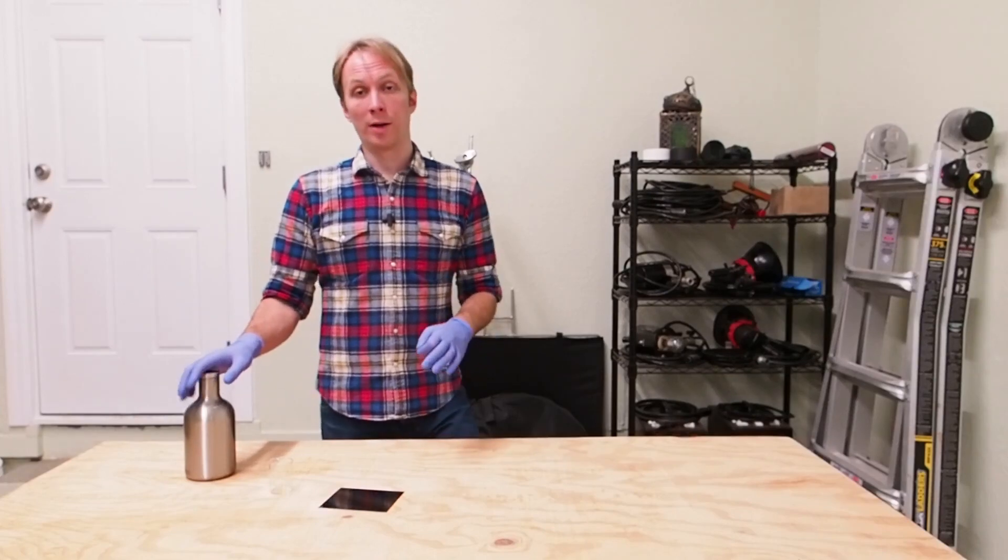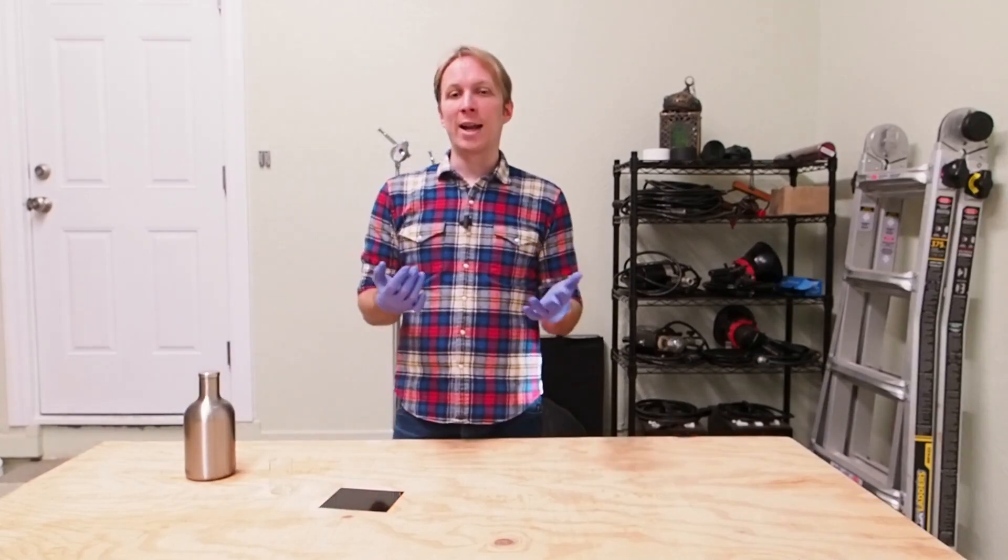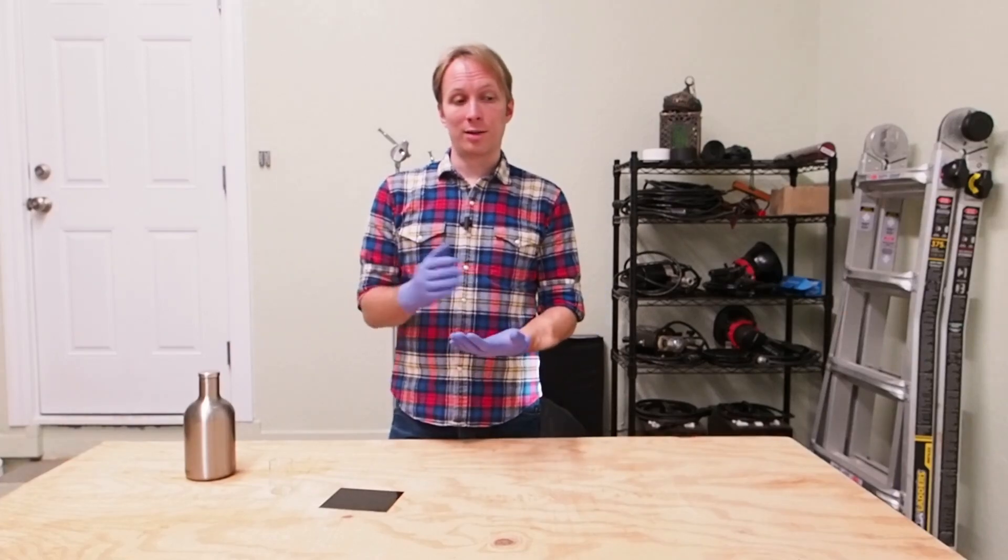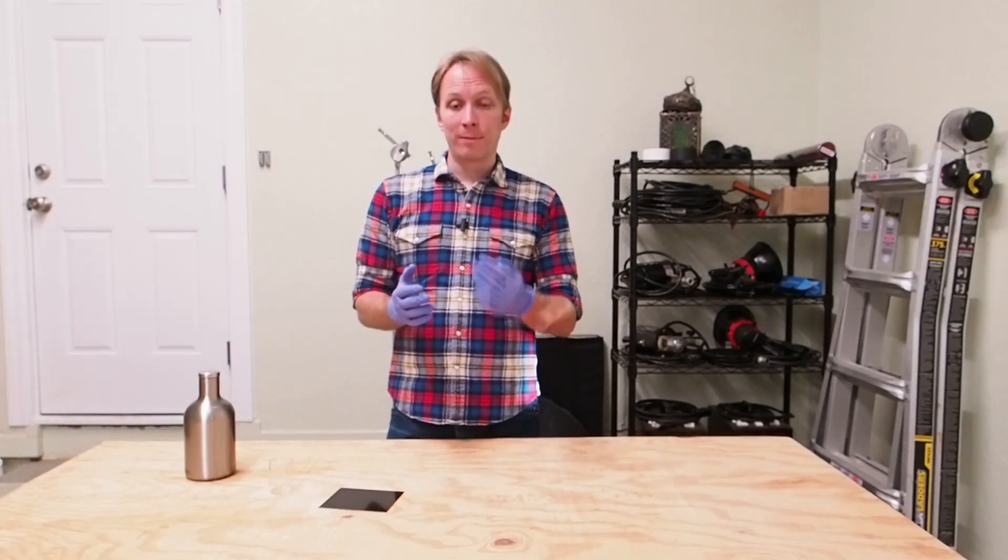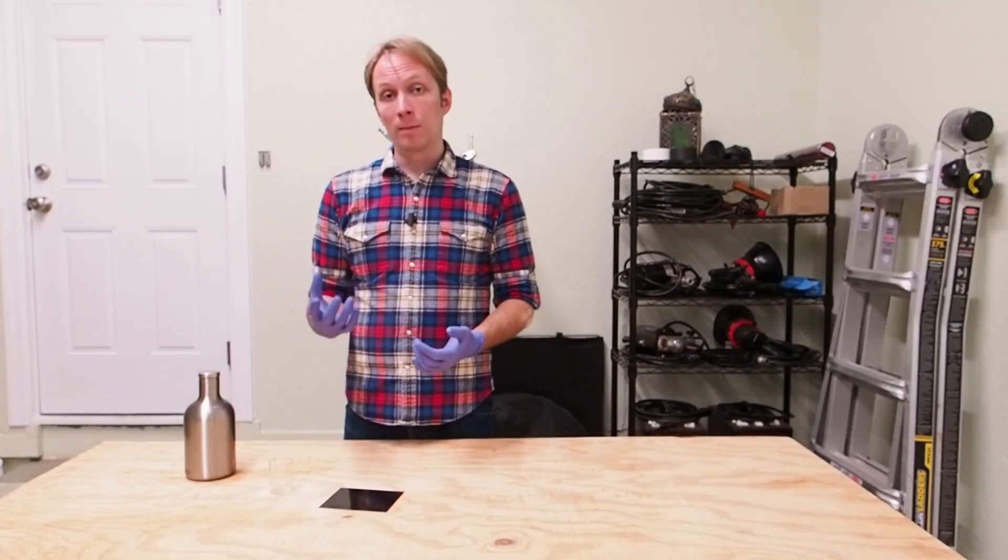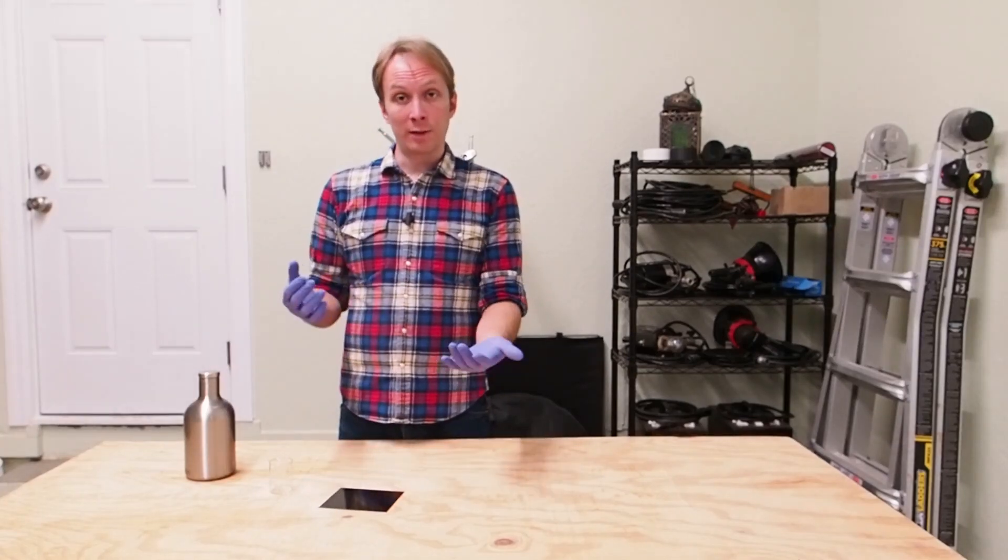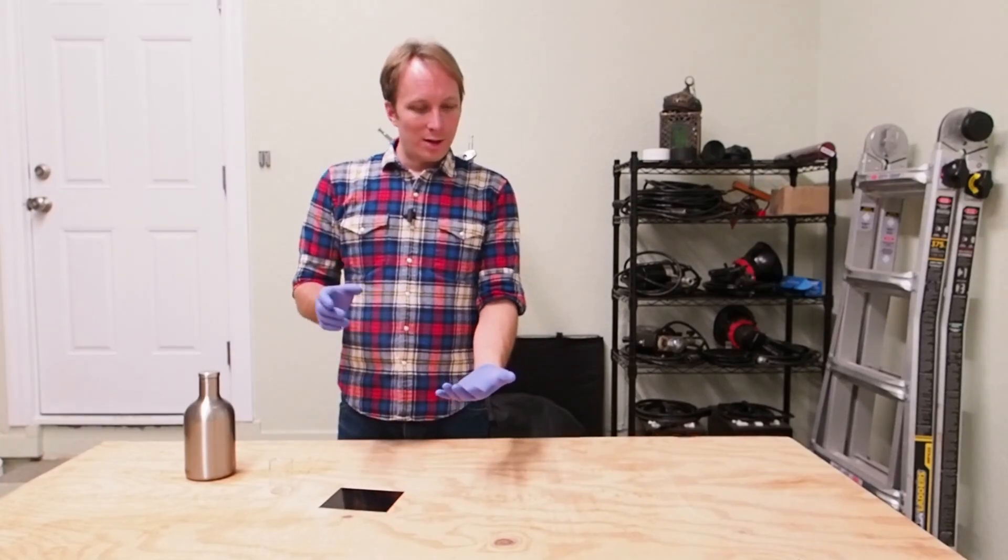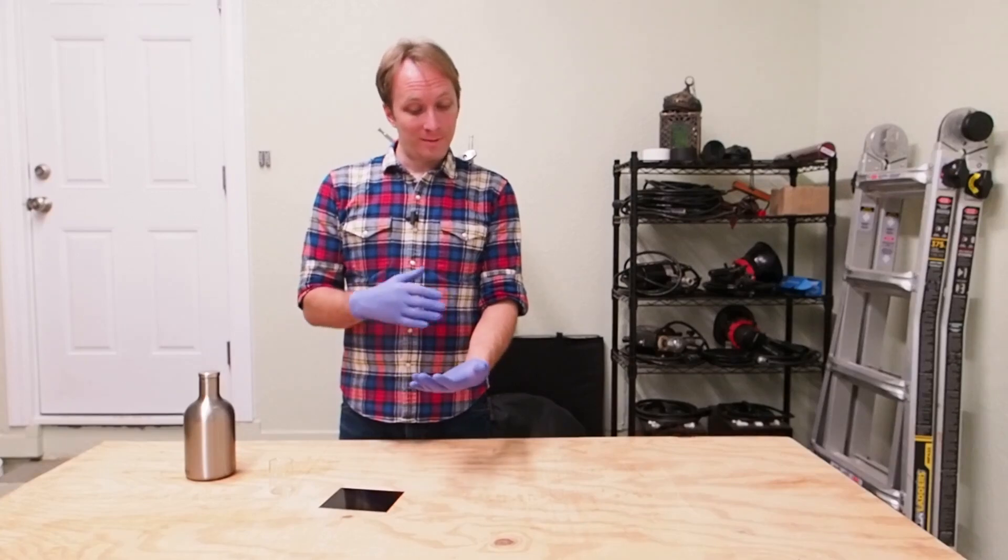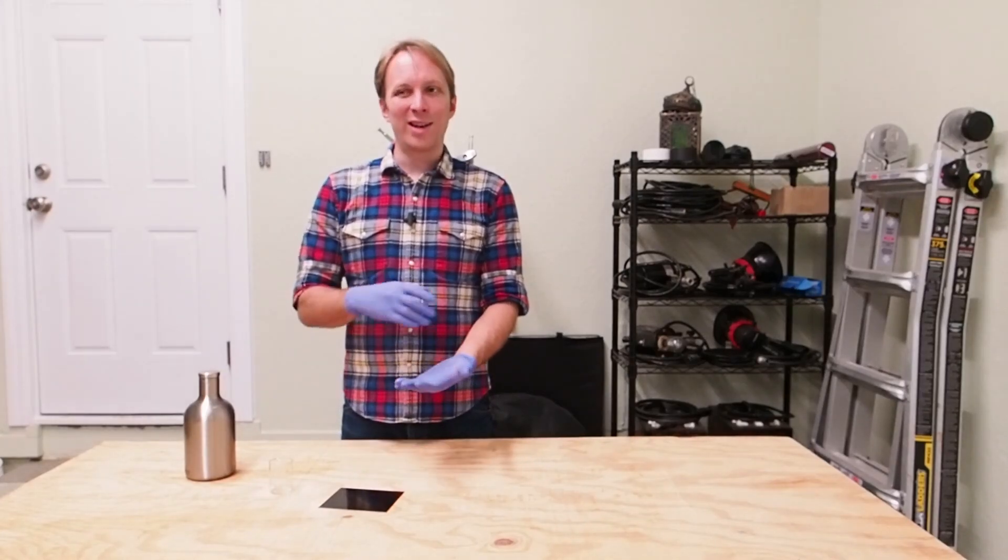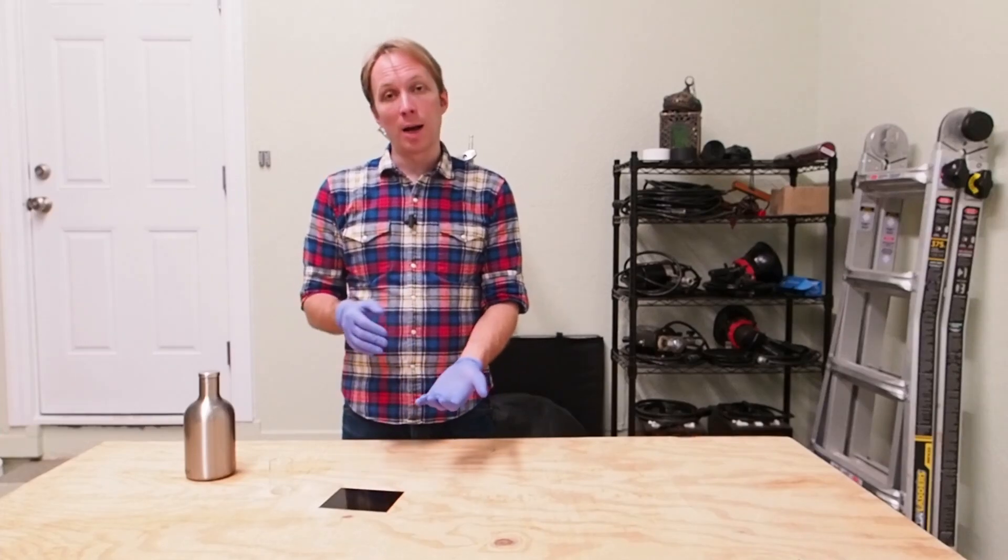Once you get to a point where you can see essentially shadow detail in your images, you want to start rinsing the developer off. For 4x5 plates I use a squirt bottle, which you'll see in the next section. I go back and forth all up and down the plate, rock it back and forth, and try to get the developer off as evenly as possible.